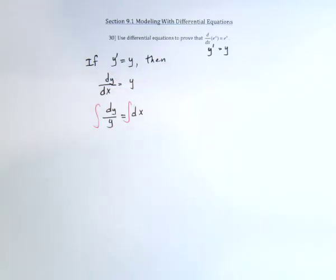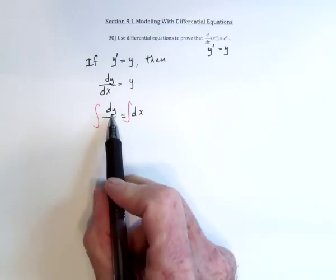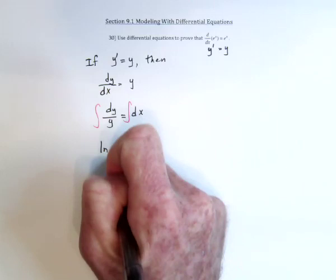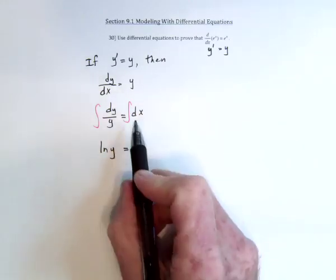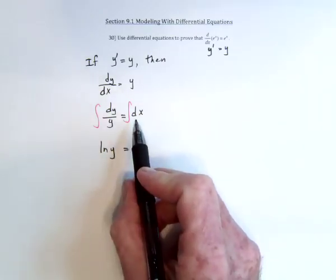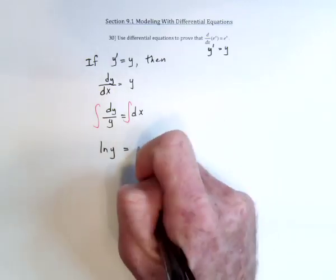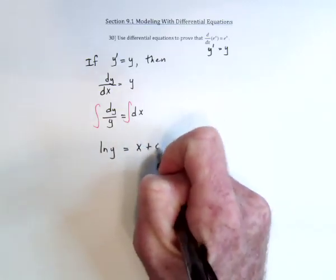So integrate both sides. This, because it's dy over y, turns out to be the natural log of y. This is a 1 dx, so the antiderivative is an x. And then, of course, plus c.